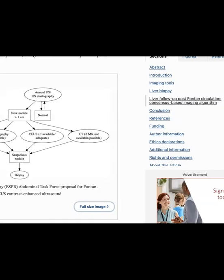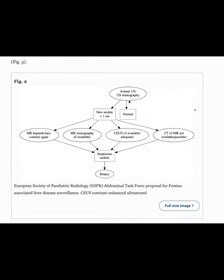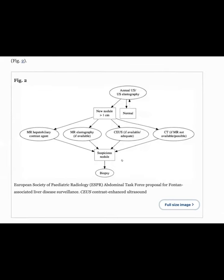Looking at the literature, the reason patients get these nodules is because of congestion — very high venous pressures at the center of the hepatic lobules, with pressure backflow into the sinusoids. The arteries start taking over, producing vascular shunts. FNH is a response to a vascular abnormality, so those shunts can proliferate regenerative cells. I found a consensus from the European Society of Pediatric Abdominal Radiologists on follow-up recommendations.